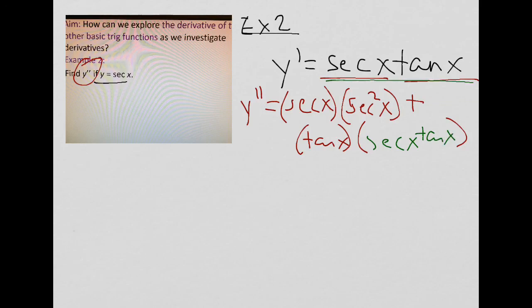So now the derivative of secant of x is secant of x tan of x. And we just need to polish this up, kind of simplify it. So y double prime is going to be secant of x to the third power. This is how we'd write that.